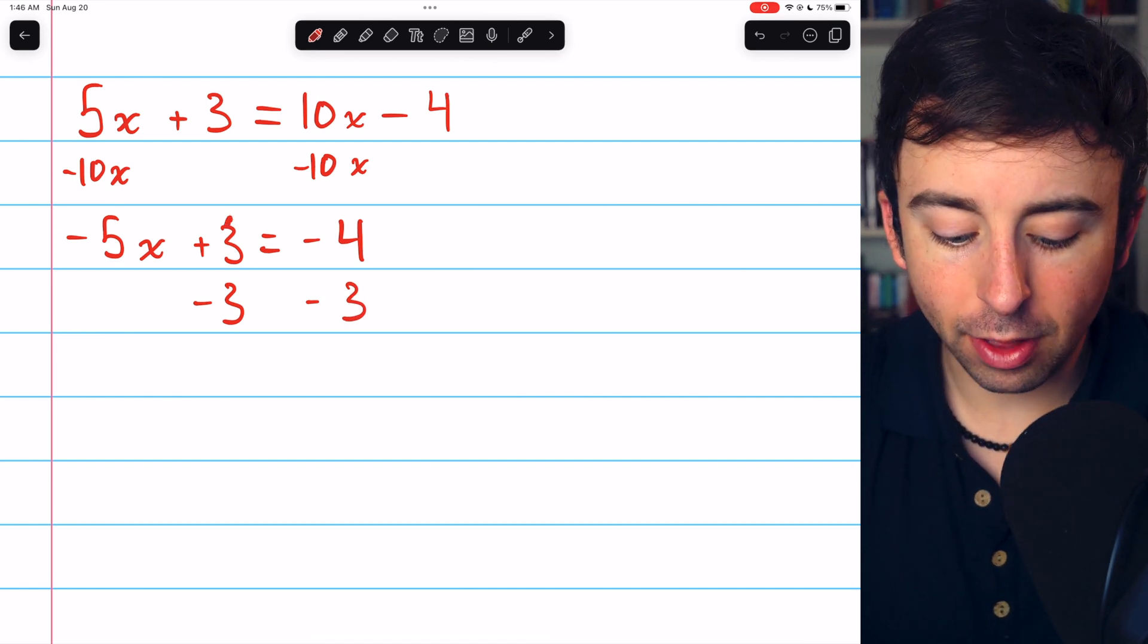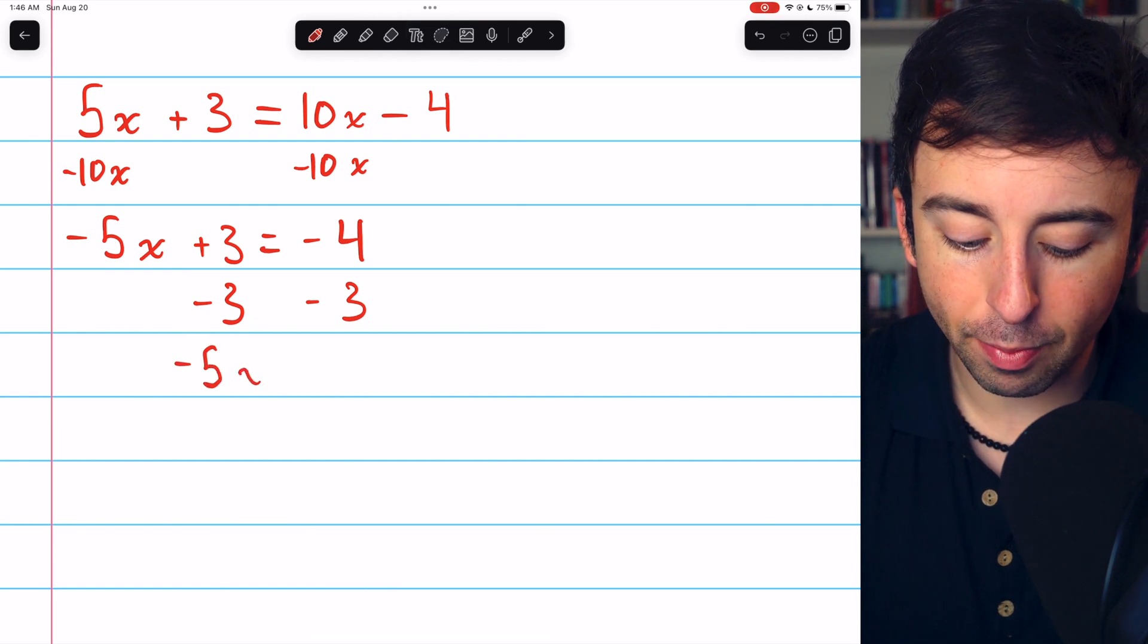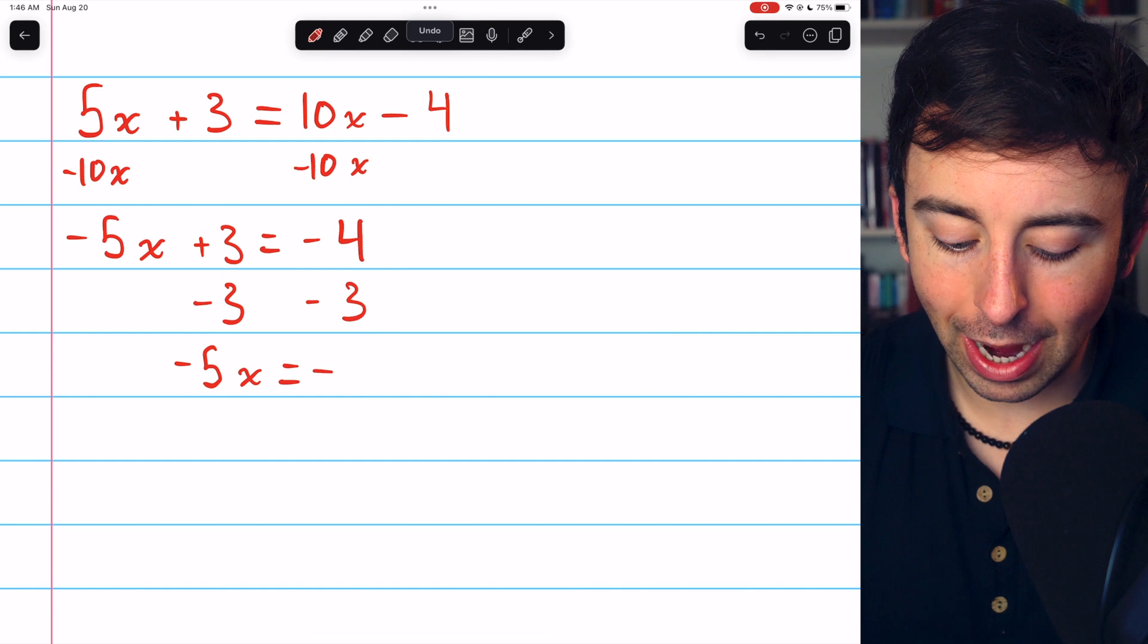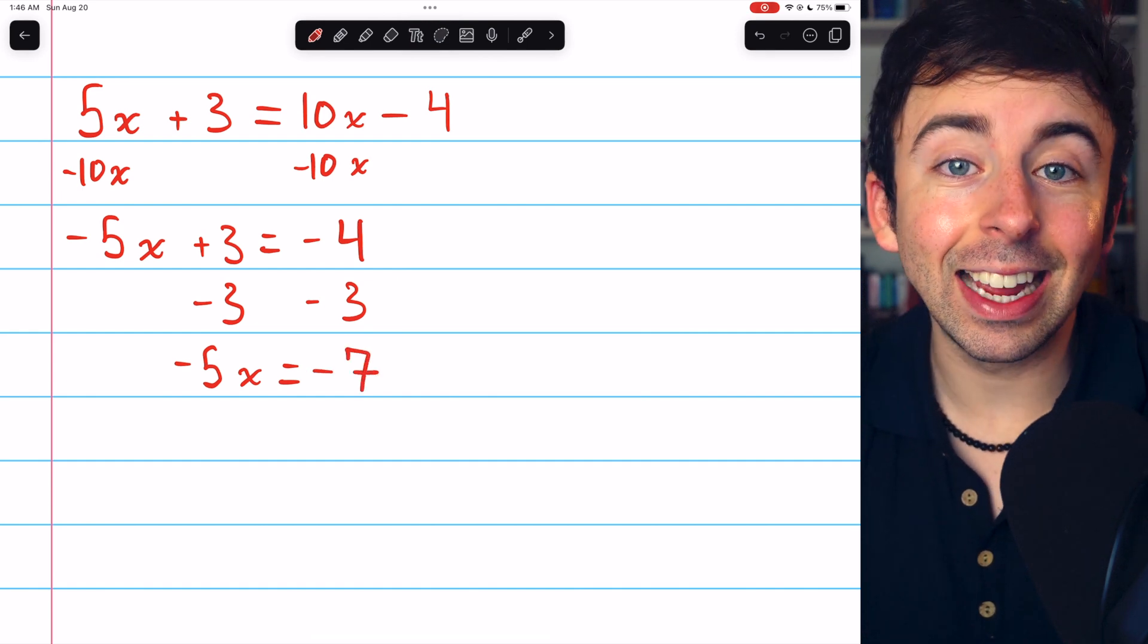Now on the left, the plus 3 and minus 3 cancel out, and we only have minus 5x. And on the right, minus 4 minus 3 is negative 7.